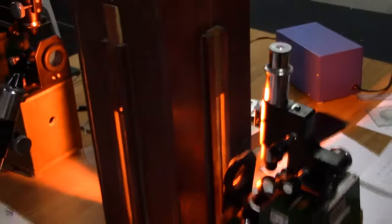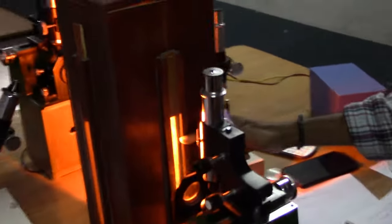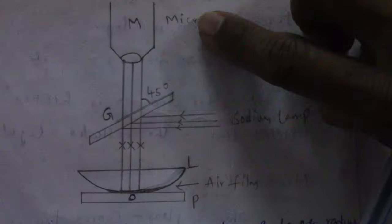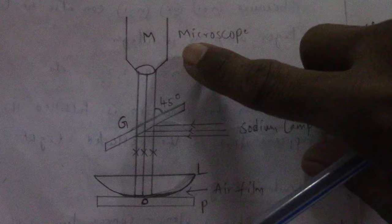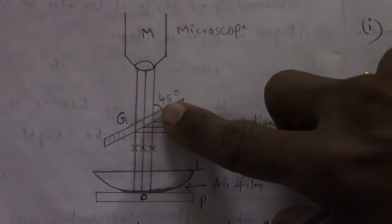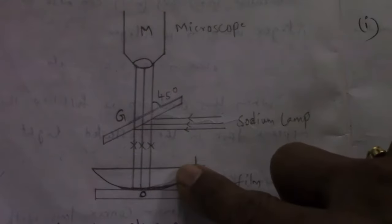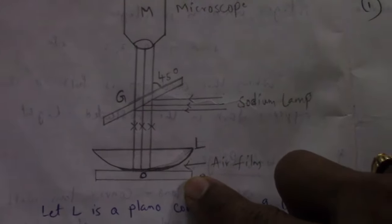The apparatus required for this experiment are a sodium vapor lamp and a traveling microscope. Here you can see the experimental arrangement in which we have a traveling microscope, sodium lamp, a plane glass plate which is inclined at 45 degrees, and a plano-convex lens placed on a plane glass plate P.